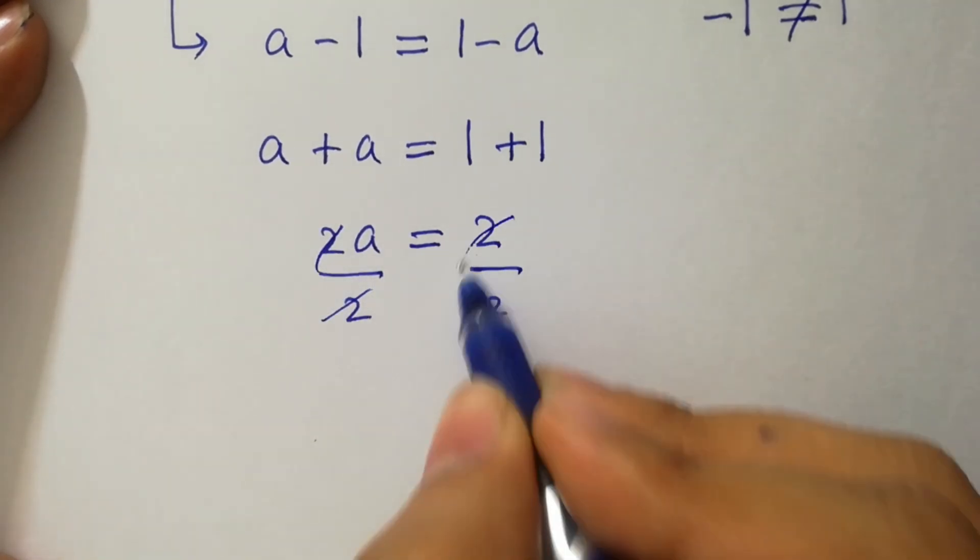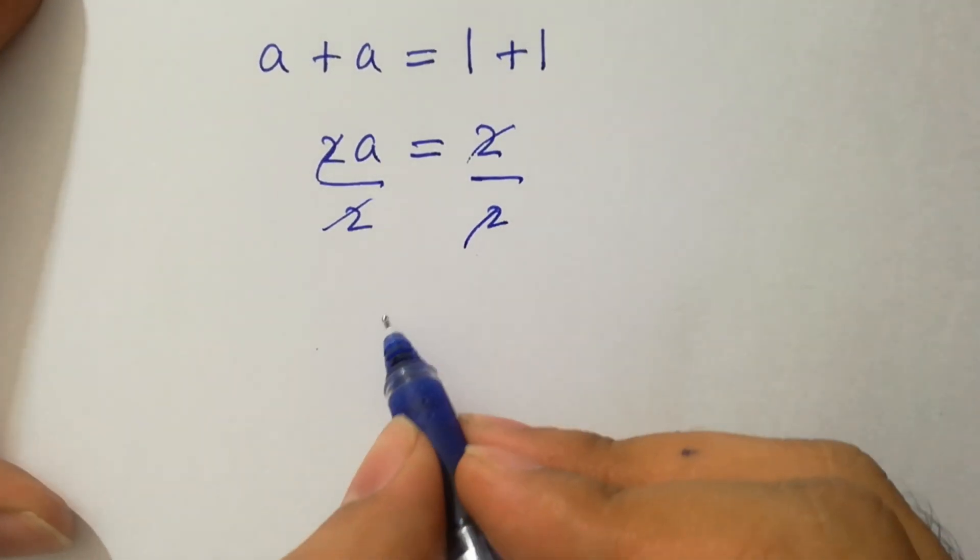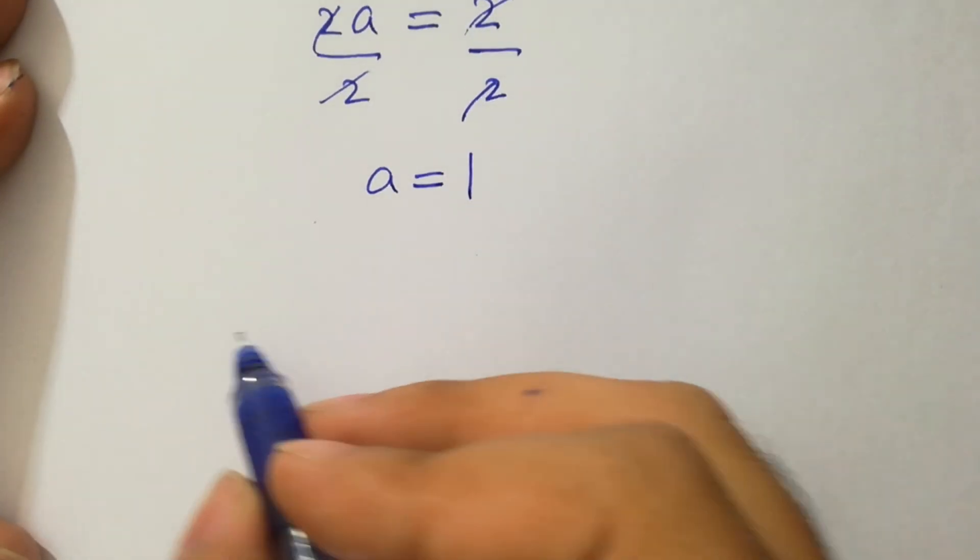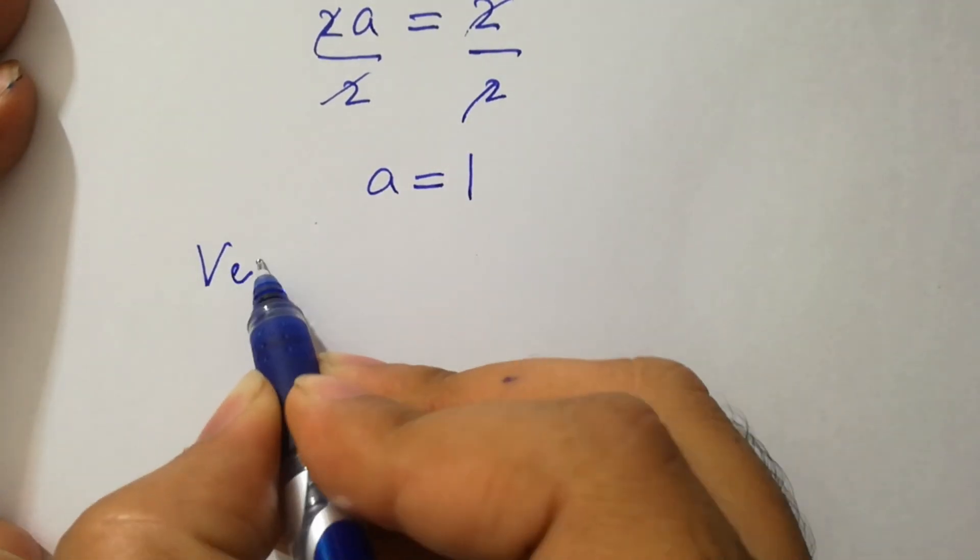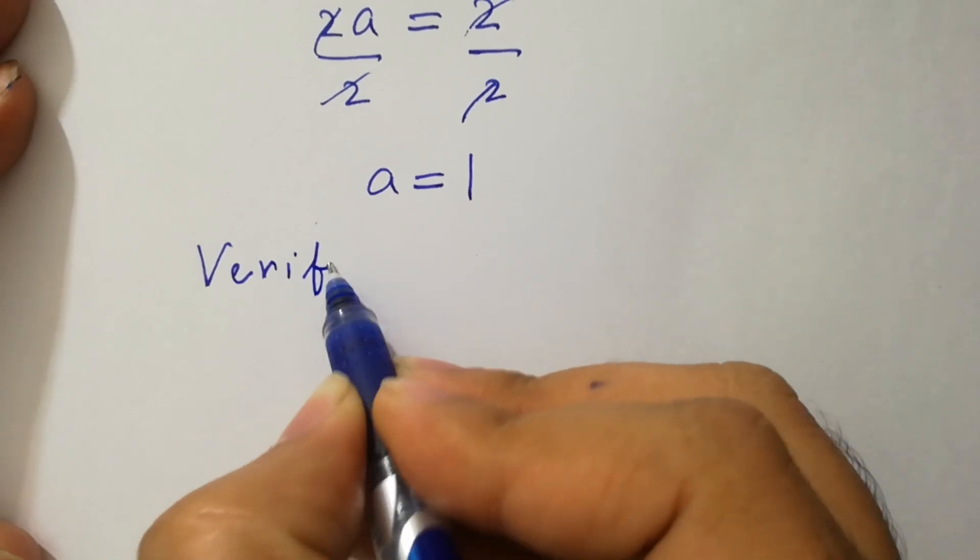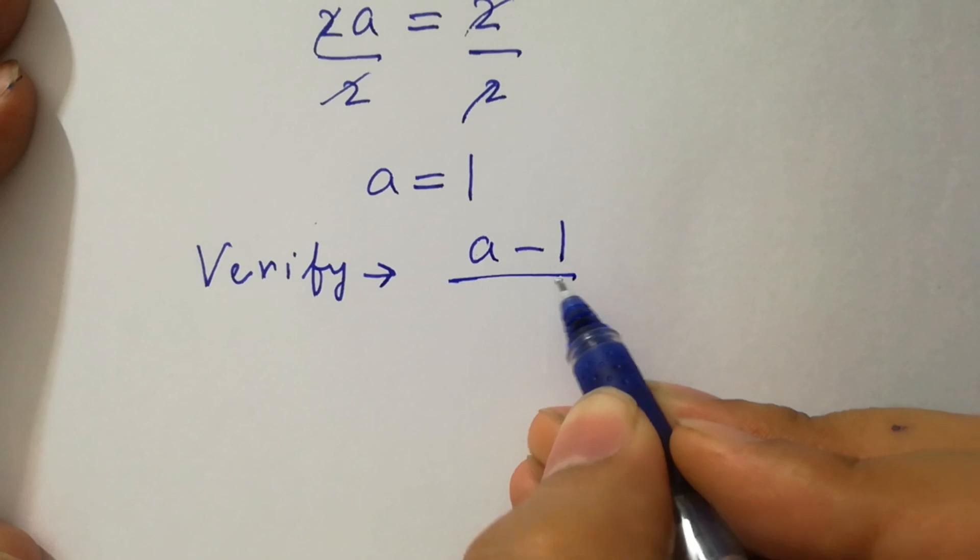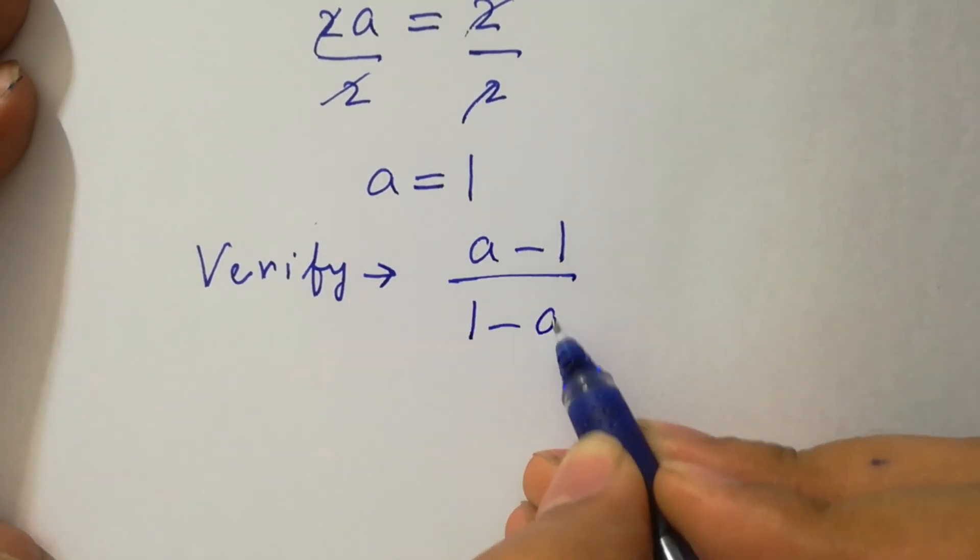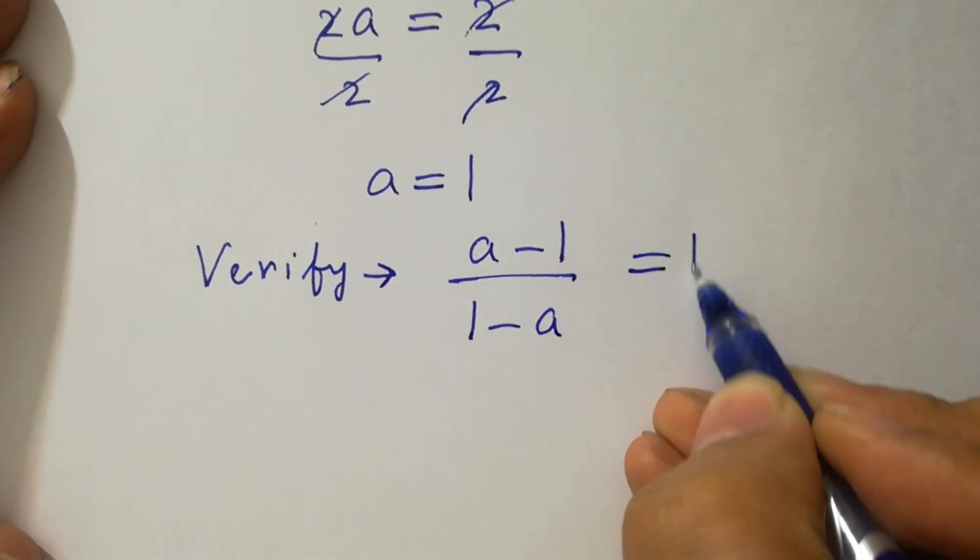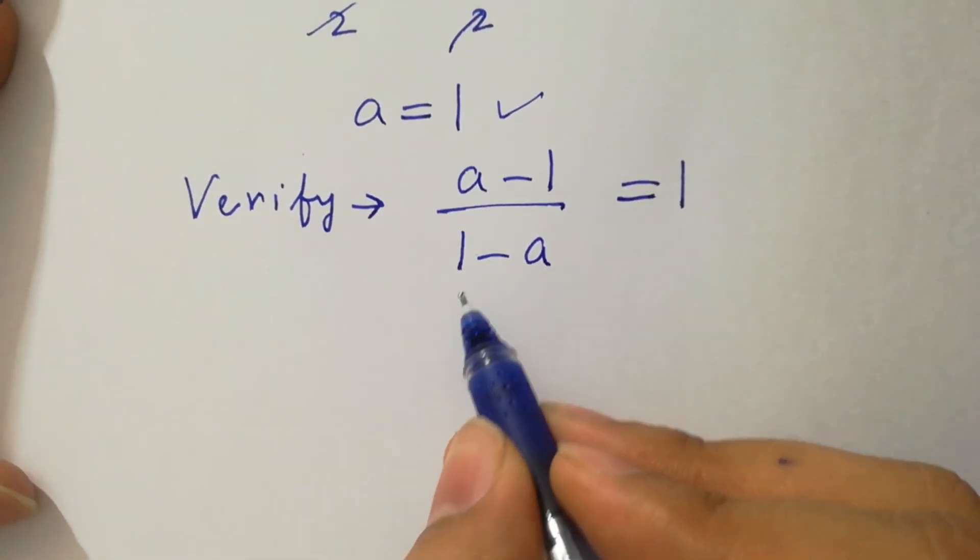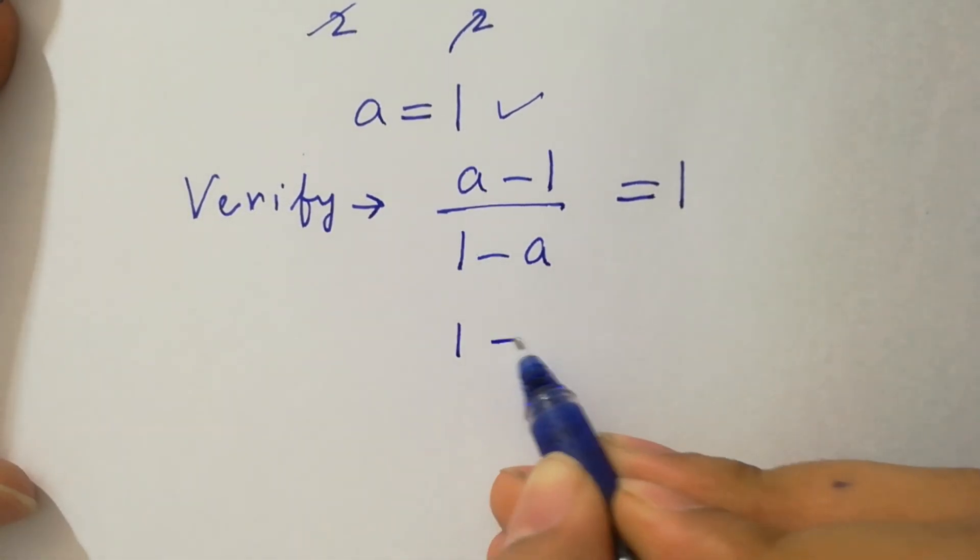We have a equal to 1. Let's verify: (a minus 1) over (1 minus a) equals 1. Put the value of a which is 1. We have (1 minus 1) over (1 minus 1) equal to 1.